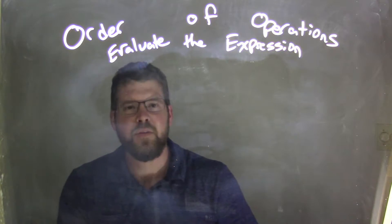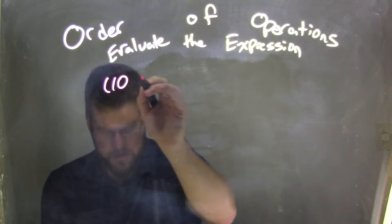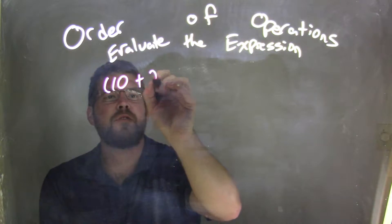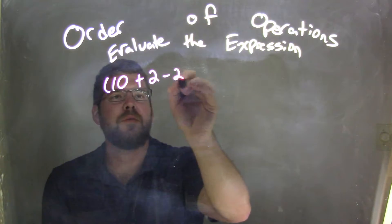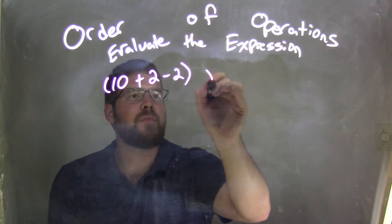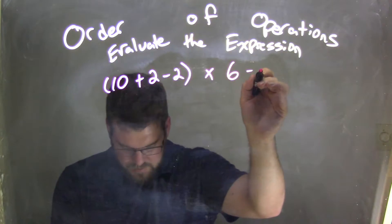So if I was given this expression: 10 in parentheses, plus 2 minus 2, times 6 minus 1.